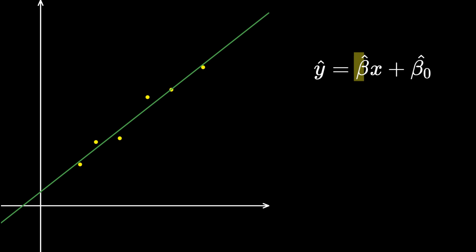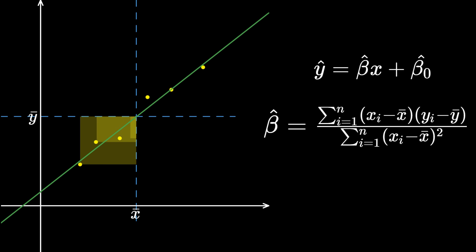The slope of this regression line, beta, is given by this seemingly complicated formula. This formula seems intimidating, but it actually has a very nice geometric interpretation. My goal in this video is to give an intuitive understanding of what it represents.